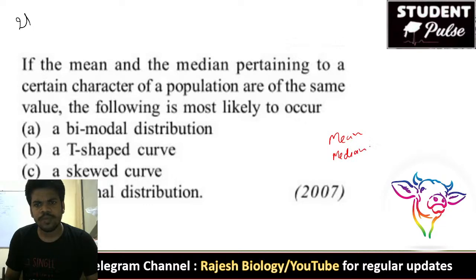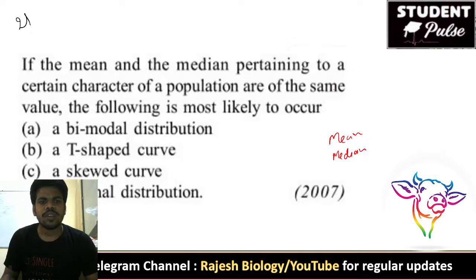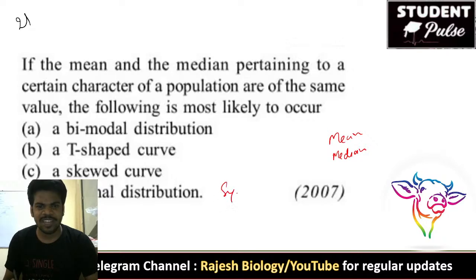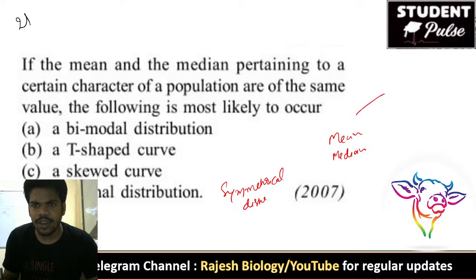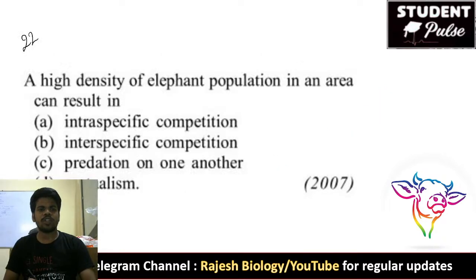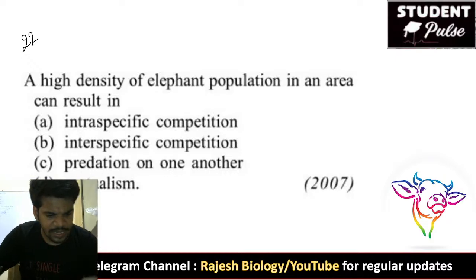Twenty-first question: if the mean and median are the same, which type of graph do we observe? That is called a normal distribution or symmetrical distribution — equally distributed on both sides.